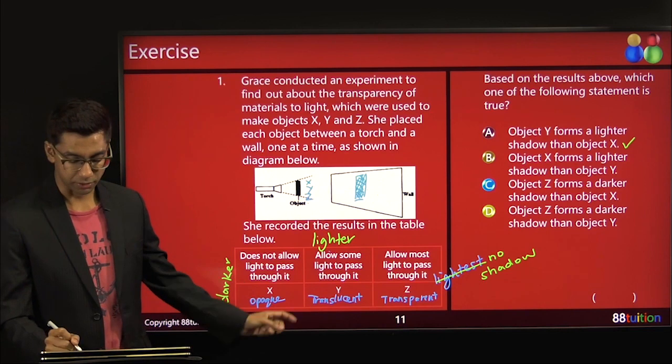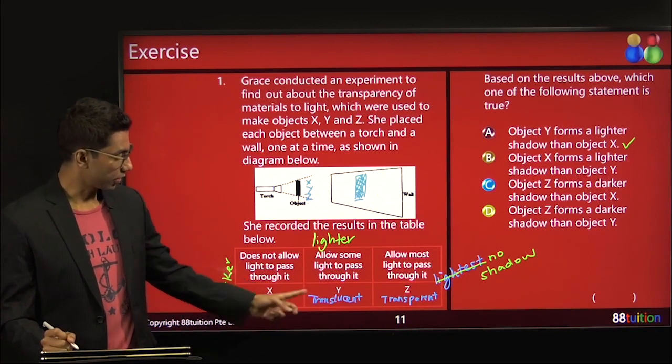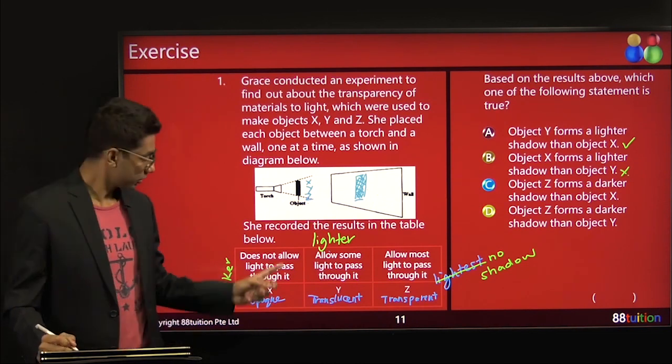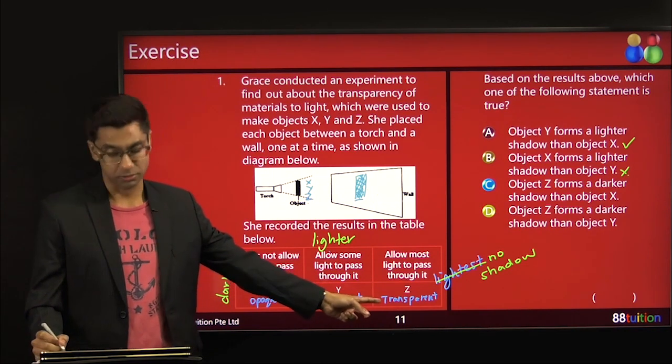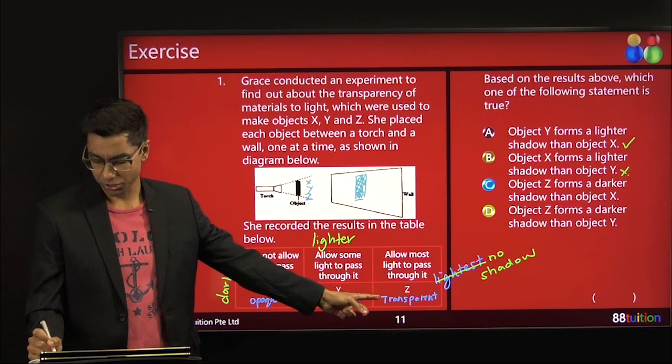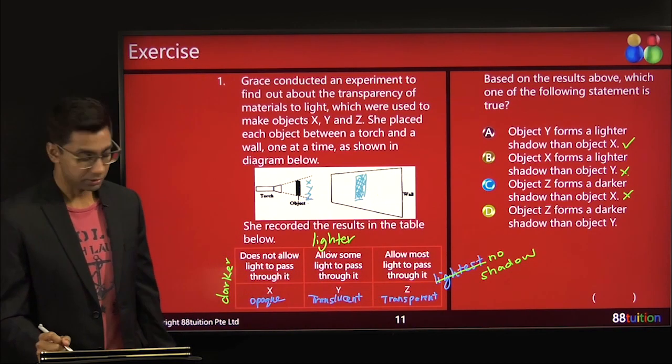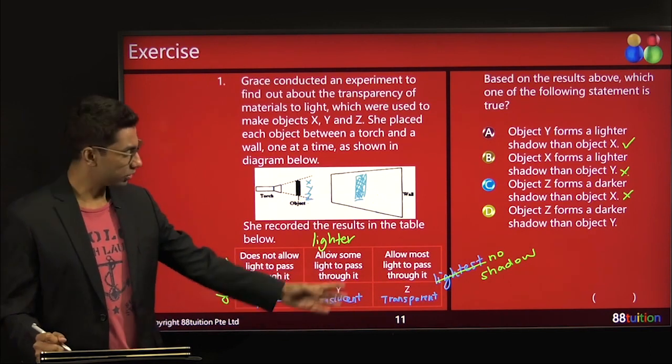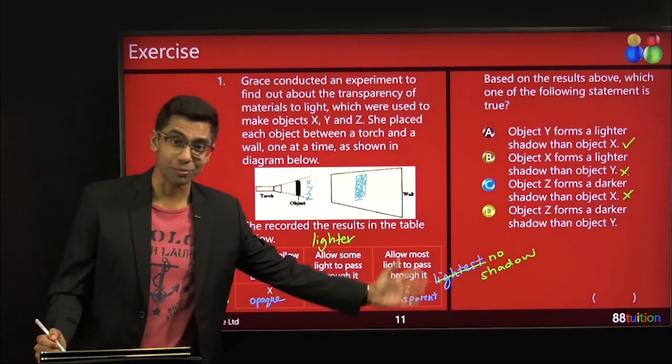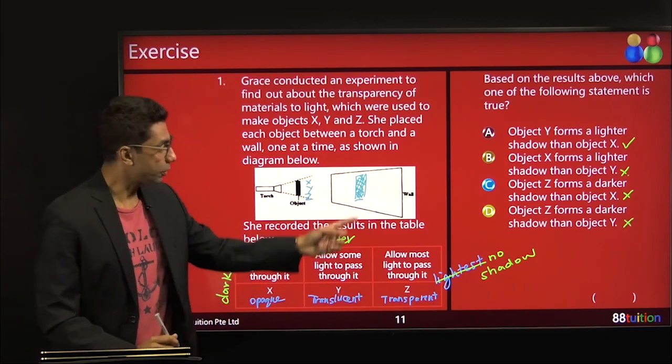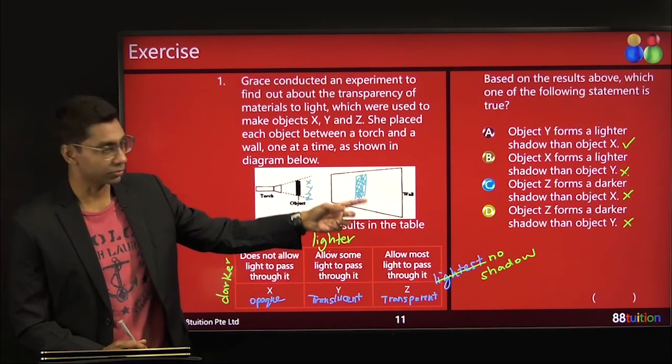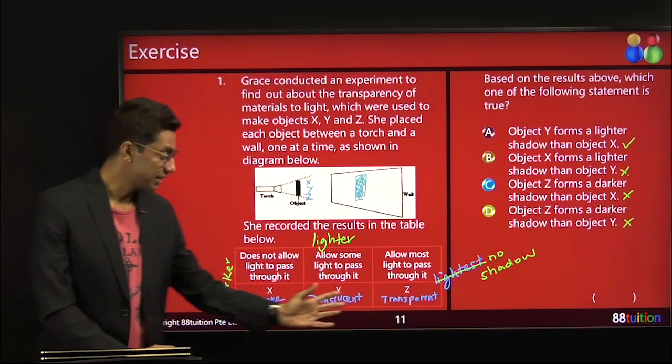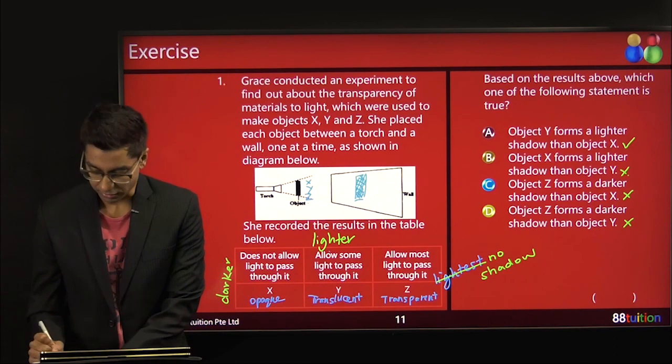Object X forms a lighter shadow than object Y. No. Object Z forms a darker. No. It's the lightest or there should be no shadow at all. No. Object Z forms a darker shadow than object. No. These guys here don't form any shadows at all. So the moment they keep saying object Z forms a shadow or darker shadow, it's not. Because this side is lighter. This side is darker. Only A is the answer.